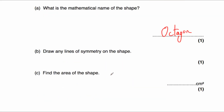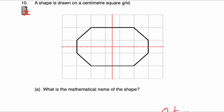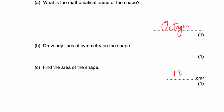Part C says find the area of the shape. It's a centimetre square grid, so counting the squares gives us the area in centimetres squared. Counting whole squares: one, two, three, four, five, six, seven, eight, nine, ten, eleven — that's eleven full squares. Then we have half a square and another half square, which together make a whole square, giving twelve. And here, another half square and another half square together make one more centimetre squared — giving thirteen. So the area is thirteen centimetres squared.